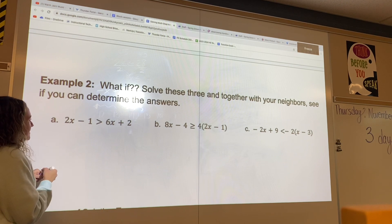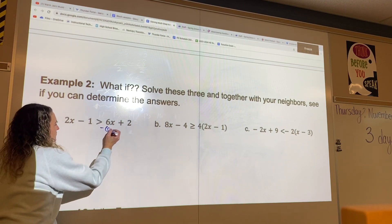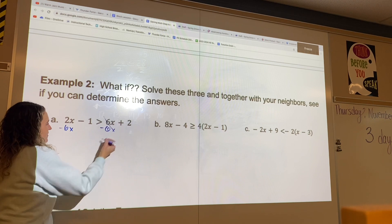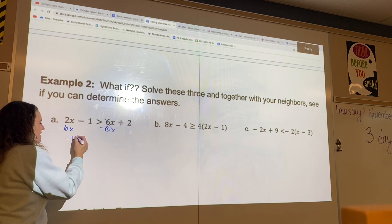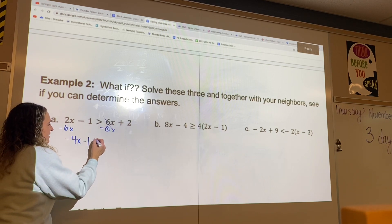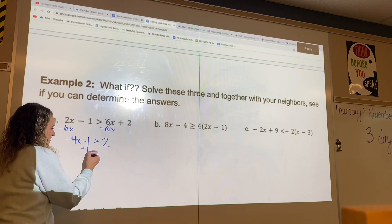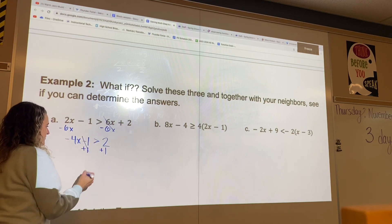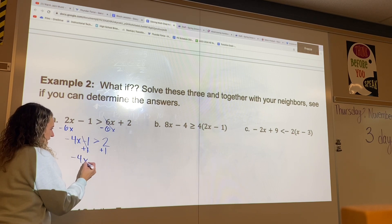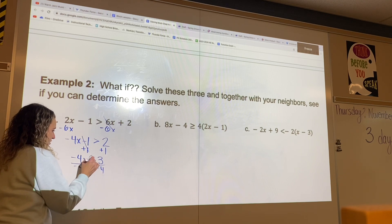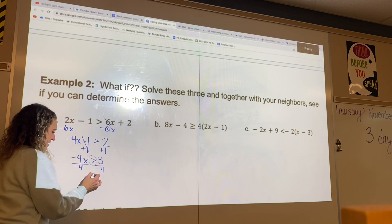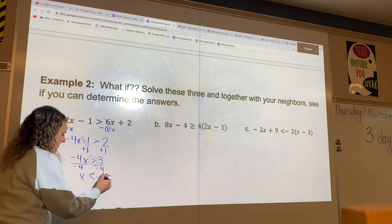All right, so for our first example, I'm going to move my 6x over here first. That goes away. We're left with negative 4x minus 1 is greater than 2. Let's go ahead and add one to this side, add one to this side. We have negative 4x is greater than 3. When we divide by negative 4, we're going to flip our sign because we're dividing by a negative. I'm going to put x is less than negative 3.